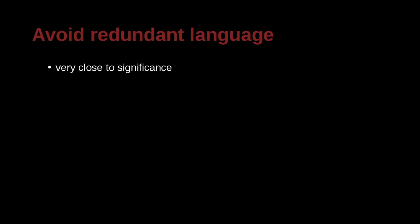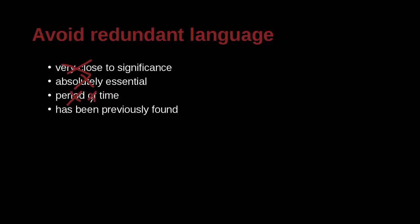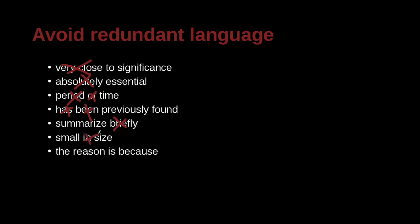'Very close to significance' — if it's statistically significant, it is; if it's not, it's not. You cannot be 'very close to significant.' 'Absolutely essential' — just say 'essential.' 'Period of time' — time is already a period. 'Has been previously found' — 'previously found' is sufficient; cut 'has been.' 'Summarize briefly' — summarize already means briefly. 'Small in size' — small already means that. 'The reason is because' — just say 'because.'